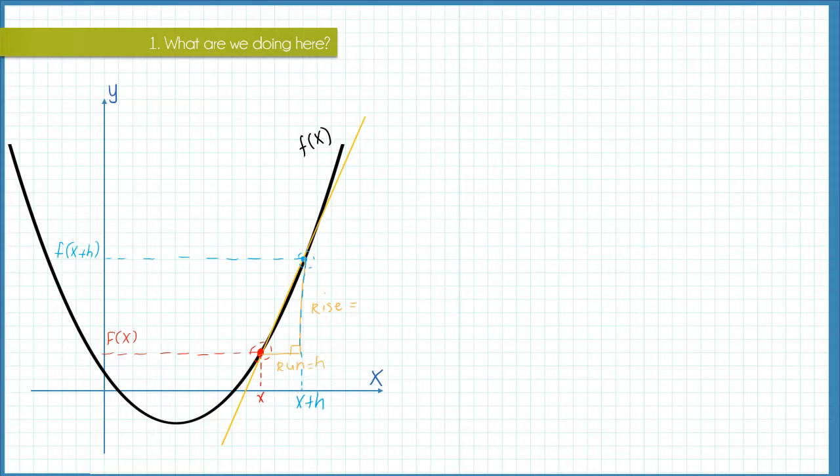Since the rise is just the difference between the y values, it will be f of x plus h minus f of x. Now we can write down the slope of the secant line in general form. The slope is going to be equal to the rise over run, which is f of x plus h minus f of x all over our run which we called h.